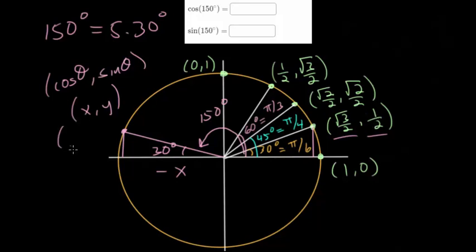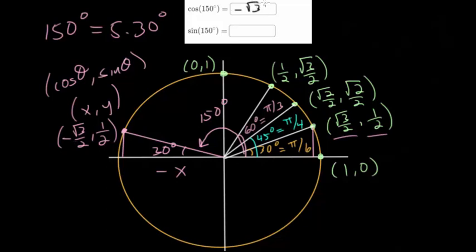So for this coordinate point, the x value is negative root 3 over 2 and the y value is 1/2. Therefore, the cosine of 150° equals negative root 3 over 2, and the sine of 150° equals 1/2.